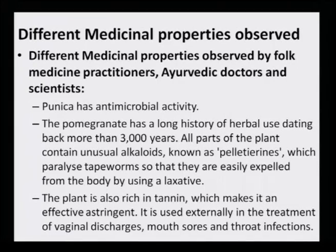In Brazil, some preparations available do not give any chemical markers, which is a bit of a dissuading situation because it does not give a clear picture of whether the same chemical or other concoctions have been added to the so-called punica dye decoctions. Punica has antimicrobial activity and a long history of herbal use dating back more than 3000 years. All parts of the plant contain unusual alkaloids called pelletierines, which paralyze tapeworms so that they are easily expelled from the body using a laxative. The plant is also rich in tannin, making it an effective astringent, and is used externally in the treatment of mouth sores and throat infections.